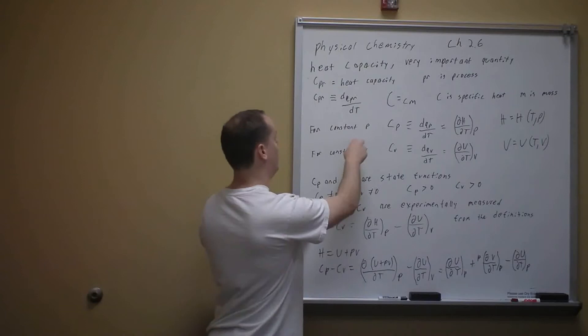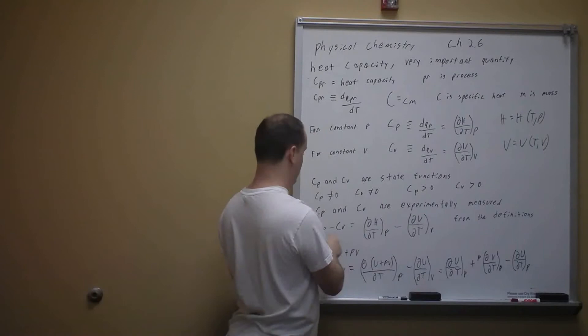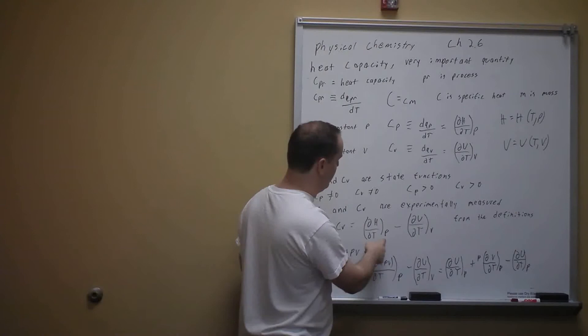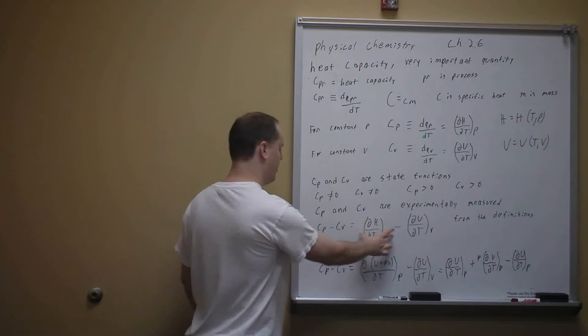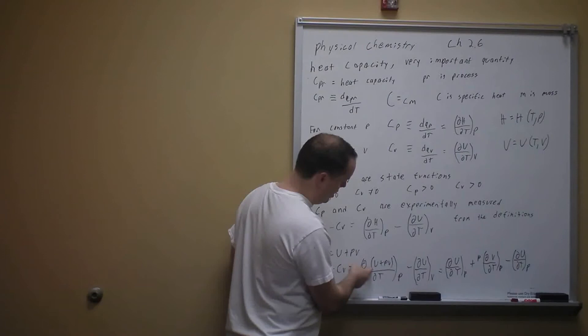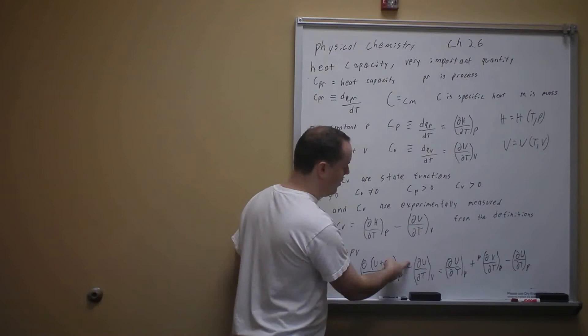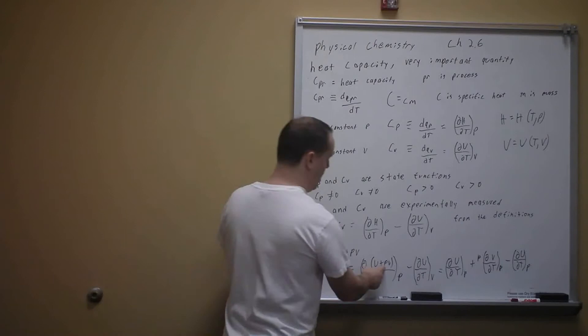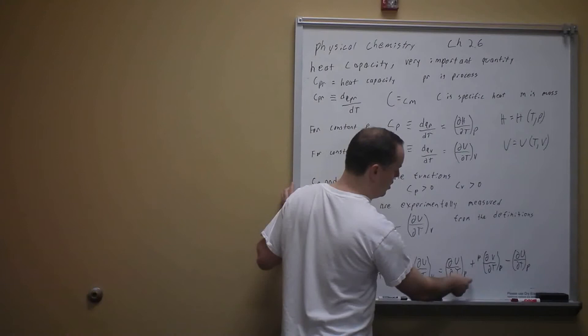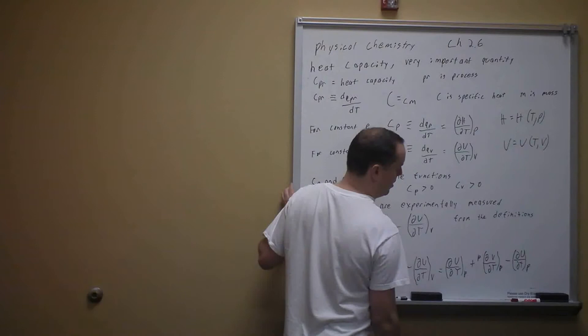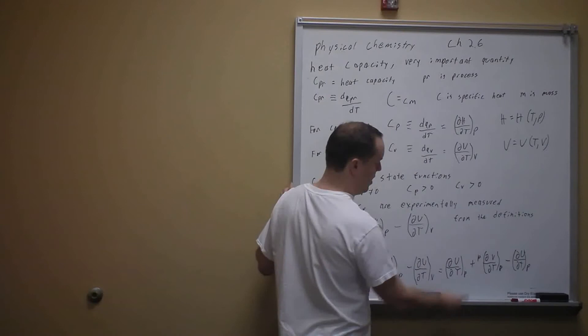Now we're going to do some algebra: take Cp minus Cv and substitute. So Cp minus Cv equals the change in enthalpy with respect to temperature at constant pressure, minus the change in internal energy with respect to temperature at constant volume. Since H equals U plus PV, substituting gives the derivative of U plus PV with respect to temperature at constant pressure, minus dU/dT at constant volume. Splitting the derivative gives dU/dT at constant P, plus P times dV/dT at constant P, minus dU/dT at constant P. P can be pulled out because pressure is constant.